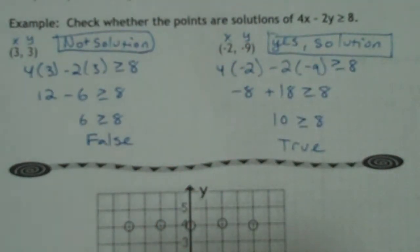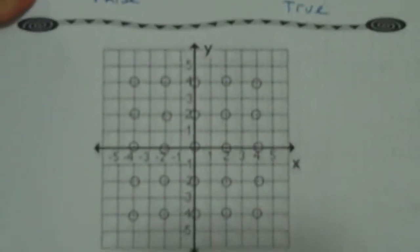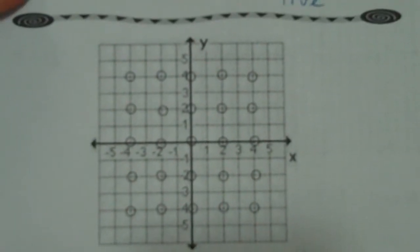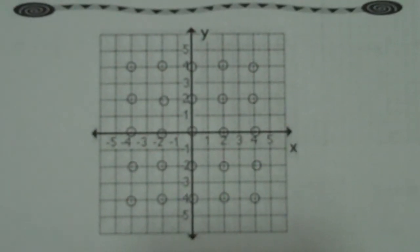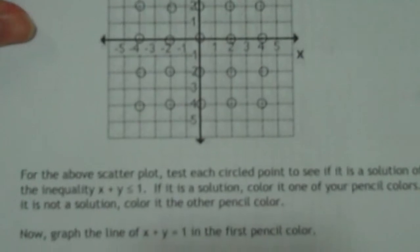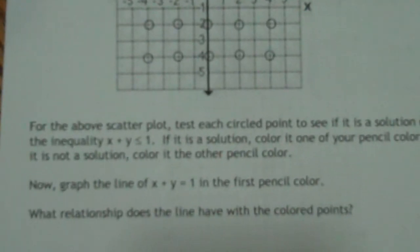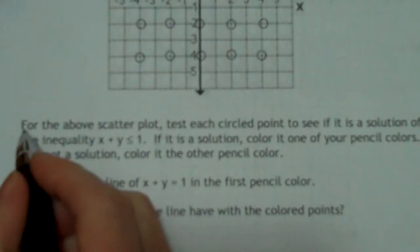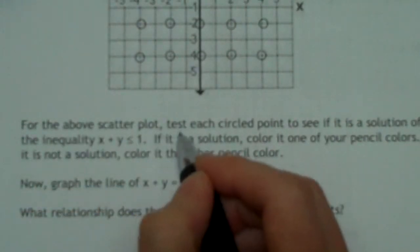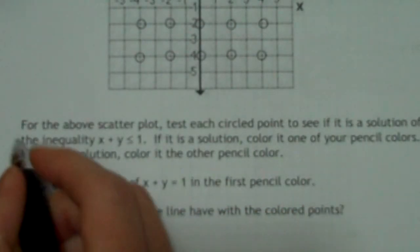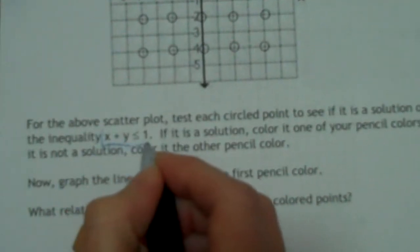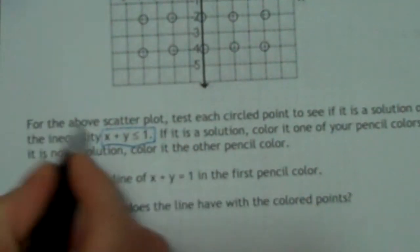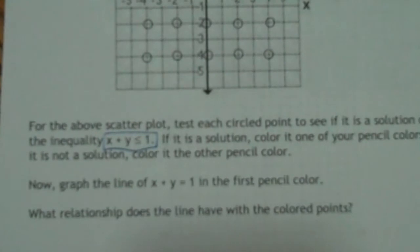So now the next thing we're going to do is take this knowledge and test a whole bunch of points. Everywhere you see a circle, you have to test that to see if it's true. They don't give us an inequality next to the graph, so we have to look down below it. In that paragraph, they tell us an inequality. So it says, for the above scatter plot, test each circle point to see if it is a solution of the inequality. x plus y is less than or equal to 1.